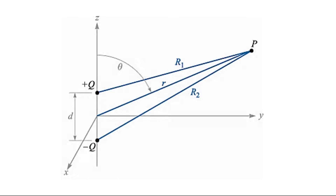In Method 1, we find the potential from the electric field intensity by taking the line integral. However, the line integral gives only the potential difference between two points, so we must define a suitable zero reference for potential. In Method 2, we find the electric potential at point P due to plus Q and due to minus Q, and by taking the negative gradient of the potential we can determine the electric field intensity.